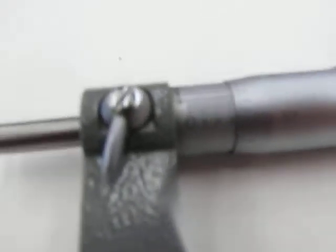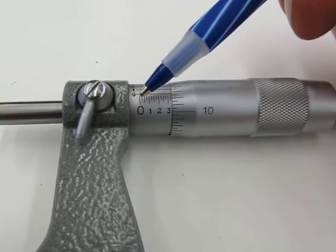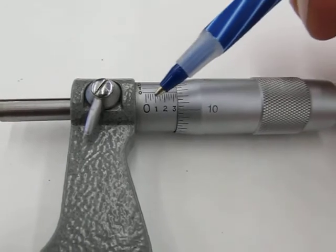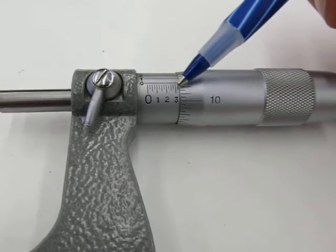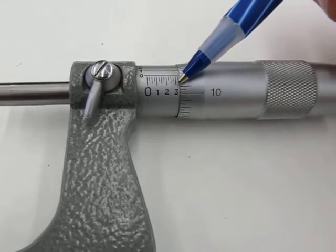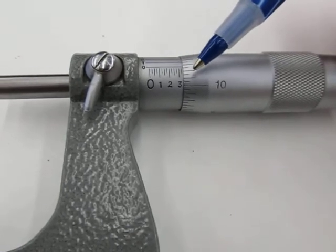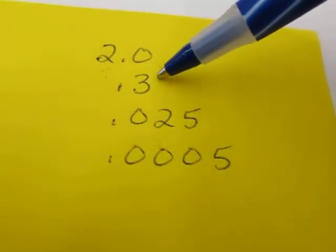Secondly I go to the sleeve. I look at how many tenths are showing up to the beginning of the thimble. There's one, two, three. Three tenths. I don't see number four, do I? I only see three. So I'm going to use that, that's the last one I can use. I can't use a four because it's underneath here. So it's a three. That's three tenths, decimal point three.